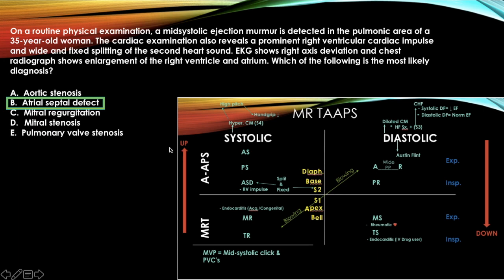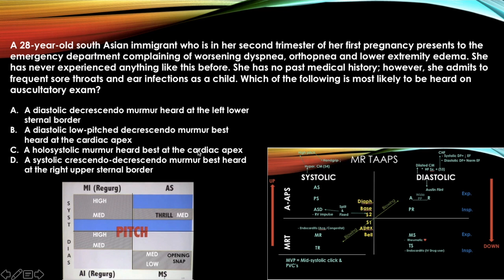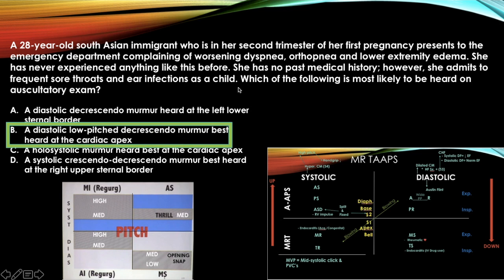The next question asks you to identify a diastolic low-pitched murmur best heard at the cardiac apex. The patient has signs of rheumatic heart disease — pregnant, from an underdeveloped country, with fever. Find rheumatic heart disease on the chart: it most commonly affects the mitral valve. Mitral stenosis is diastolic, low-pitched, and best heard at the apex. That matches the description and is the answer.